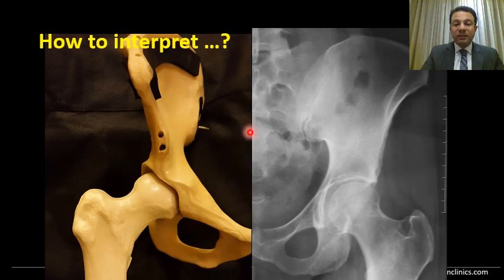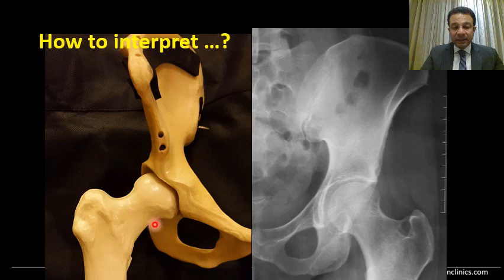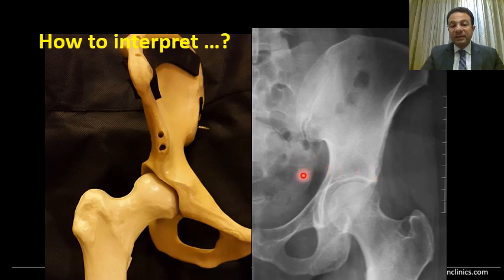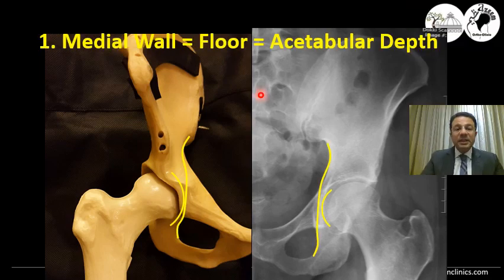How to interpret this on an X-ray? The problem is converting each area — for example, the area of the anterior wall or column — into a line that this area represents on the X-ray. We will start with the medial wall. The medial wall is represented by a line at the teardrop.